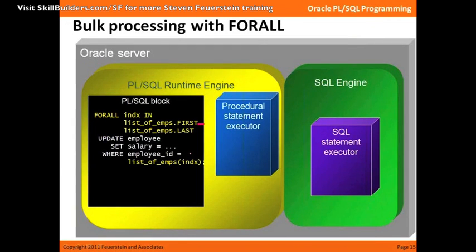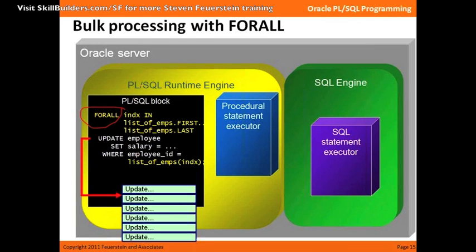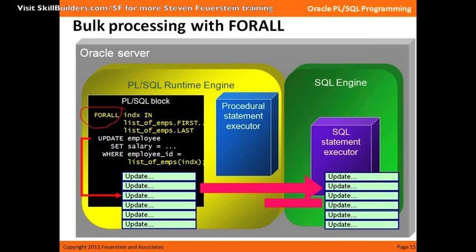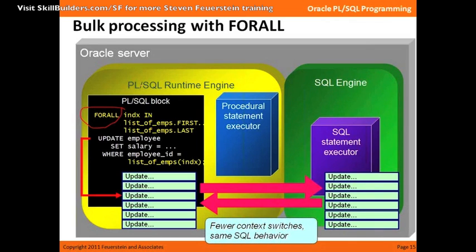What Oracle did in Oracle 8i was add bulk processing capabilities with BULK COLLECT and FORALL. Now, when Oracle hits a FORALL statement instead of a regular loop, it says: I see that you've got a thousand updates — I'm going to generate those thousand updates right now and pass them over to the SQL engine in a single context switch. The SQL engine does those thousand updates without going back and forth, then returns control to the PL/SQL engine. So there are many fewer context switches, same SQL behavior, vastly improved performance.